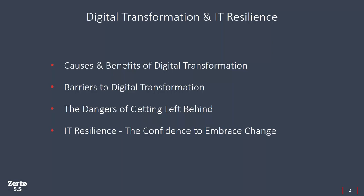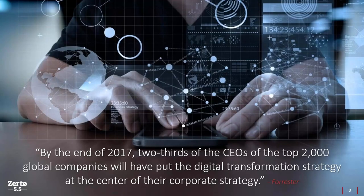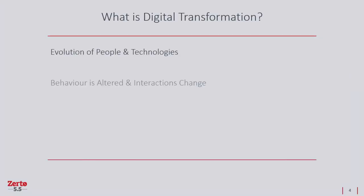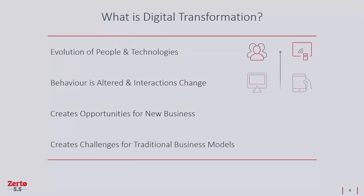The reason why we're talking about digital transformation is quite clear. Forrester states that by the end of 2017, almost two-thirds of the CEOs of the top 2,000 global companies will have put in place a digital transformation strategy at the center of their corporate strategy. Digital transformation is about the evolution of people and technology — as technology has evolved, the way that people interact with it has also changed.